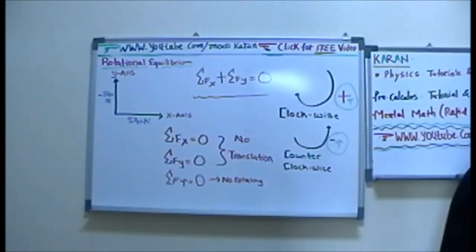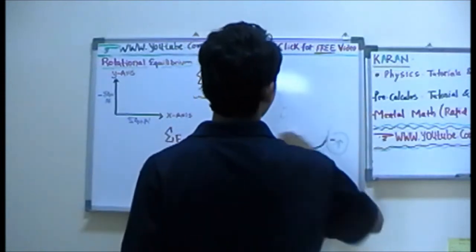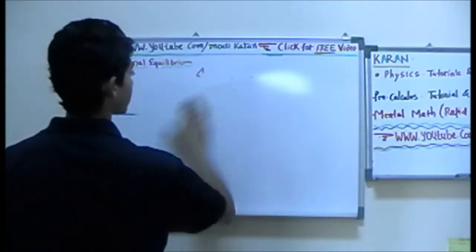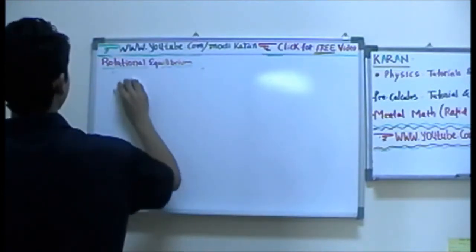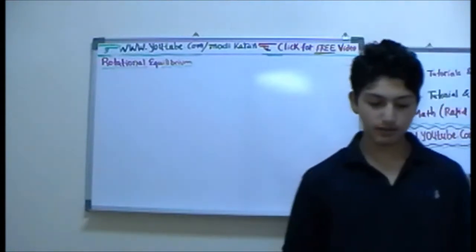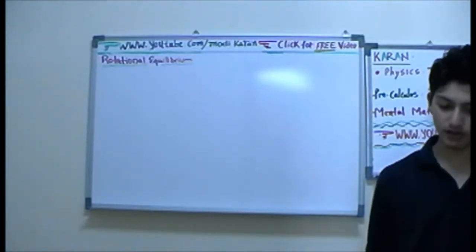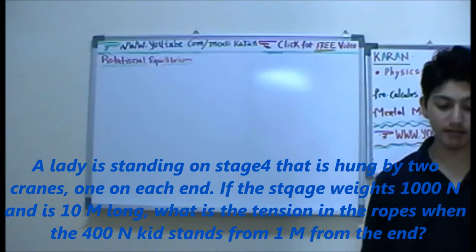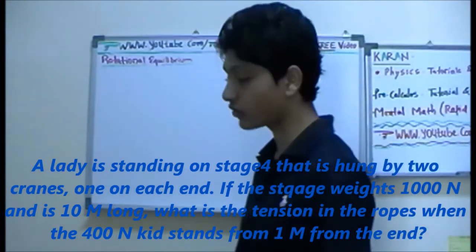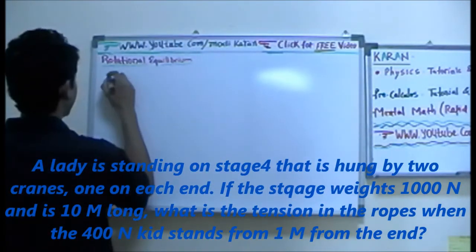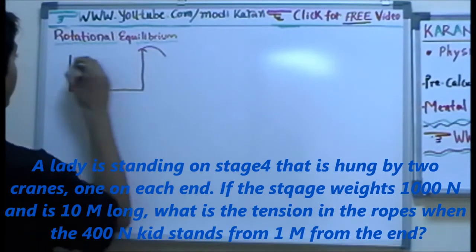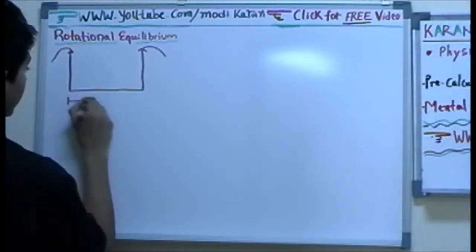Now let's move on to our examples. As you can see, the problem says: a lady is standing on a stage that is hung from two cranes, one on each end. The stage weight is 1000 N and is 10 meters long. What is the tension of the ropes when the 400 N person stands one meter from the end? Let's draw the diagram. There is a crane on this side and a crane on the other side, and this is the stage which is 10 meters long.